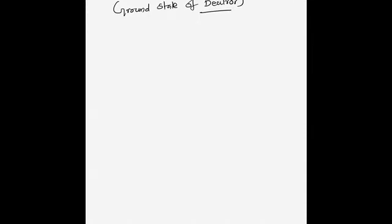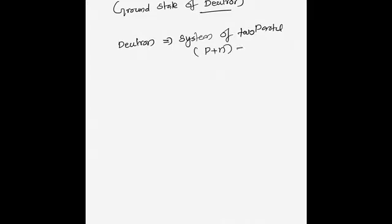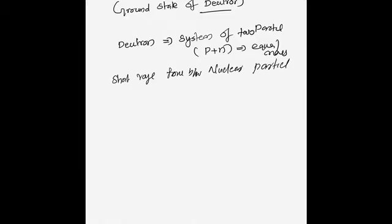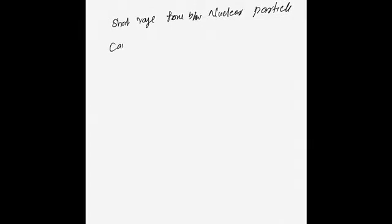The deuteron is a system with one proton and one neutron — a two-particle system where the proton and neutron have almost equal mass. Inside a nucleus, the short-range force between nuclear particles can be described using the Yukawa potential.